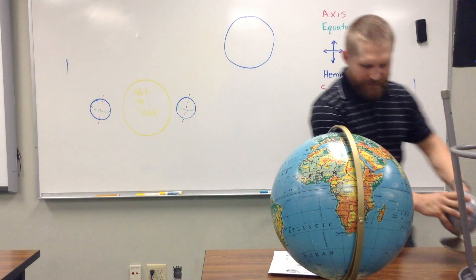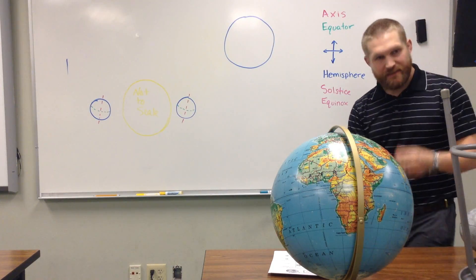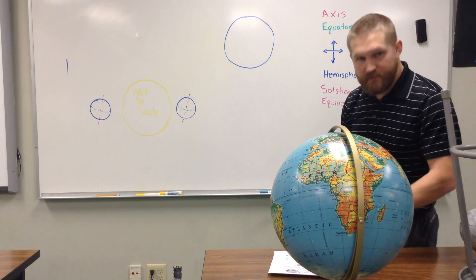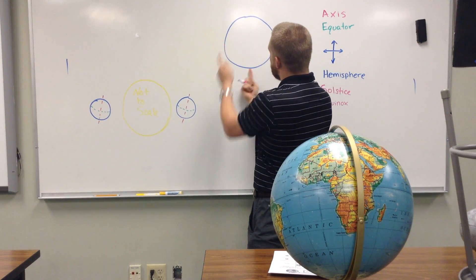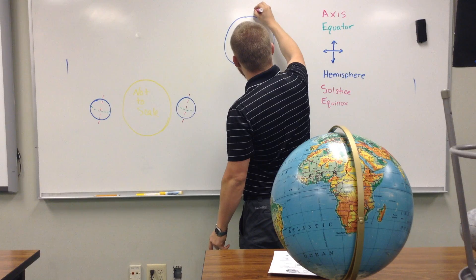So, the earth's axis is tilted a little bit, and it's tilted just slightly at 23.5 degrees. So, instead of the earth spinning like a basketball like this, the axis is actually tilted just a little bit.